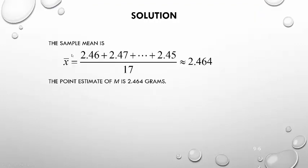The sample mean — if I add up all those values and divide by 17 — gives an approximate sample weight of 2.464 grams. So the point estimate for the population mean mu is 2.464 grams. We use the value of the statistic x-bar to say something about the population average. That's all a point estimate is — just one single value.